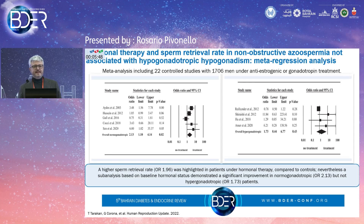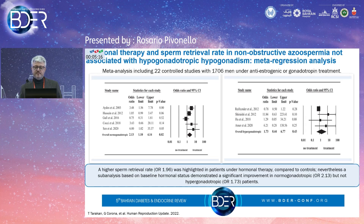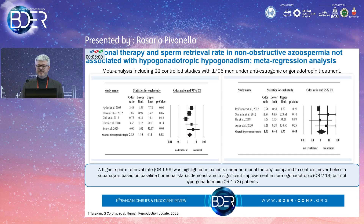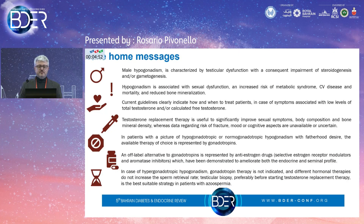The most complicated population are those with azoospermia without concurrent hypogonadotropic hypogonadism. A meta-regression analysis showed higher sperm retrieval rates in patients under hormonal therapy — gonadotropins or anti-estrogen therapy — but sub-analysis based on baseline hormonal status demonstrated significant improvement only in normogonadotropic patients, not in hypergonadotropic ones. When gonadotropin levels are very high, hormonal therapy is unlikely to improve sperm retrieval from the testis.